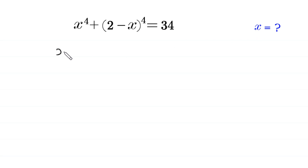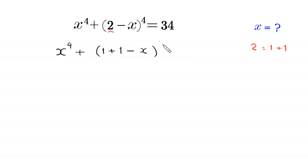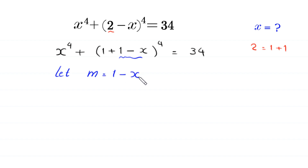We start by rewriting 2 as 1 plus 1, so the equation becomes x to the power 4 plus (1 plus 1 minus x) whole to the power 4 equals 34. We suppose that (1 minus x) is equal to m, so m equals 1 minus x. Moving terms gives us x is equal to 1 minus m.